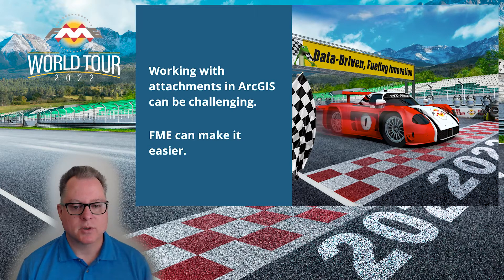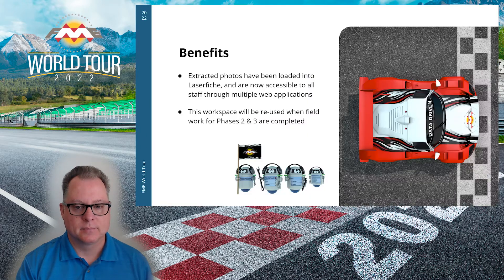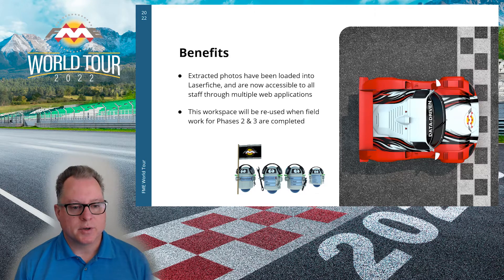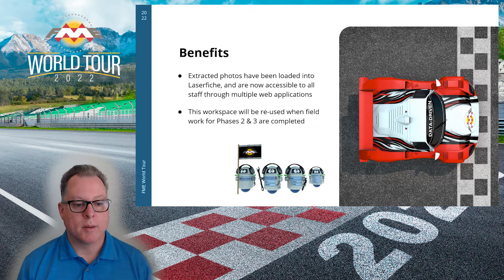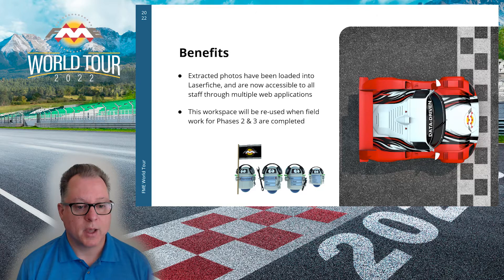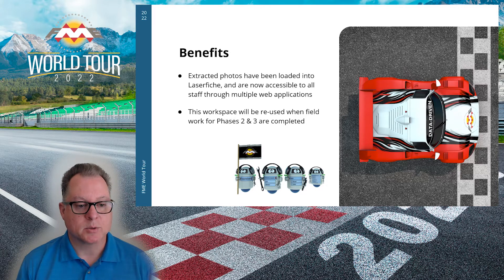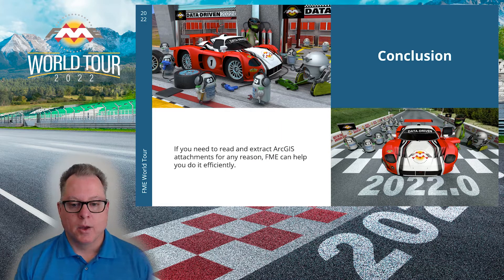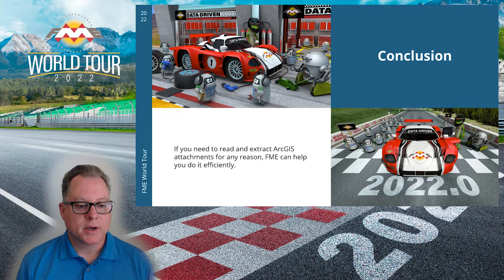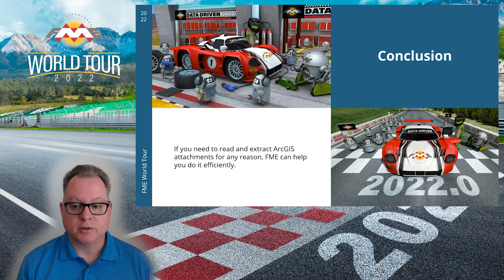Working with attachments in ArcGIS can be challenging, but FME provides the tools to make it easier. Now that the photos are loaded into Laserfiche, they're accessible to all staff through multiple web applications. Because we built this workspace in FME, we can reuse it for two more phases of work. When all is said and done, we'll probably have more than 80,000 to 90,000 photographs loaded into our document management system. Other attachment-related workflows can be developed using parts of this workspace, such as pulling attachments from Portal or ArcGIS Online and putting them into a local or enterprise geodatabase.